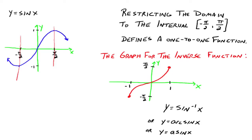The point pi over 2 comma 1 becomes 1 comma pi over 2 on the inverse function, because the x and y parts of the ordered pairs switch places going from a function to its inverse. So negative pi over 2 comma negative 1 becomes negative 1 comma negative pi over 2. If you do that for all ordered pairs between negative pi over 2 and pi over 2 and connect the dots, you get this nice looking curve — the graph of the inverse sine function. This is typically where the domain is restricted.